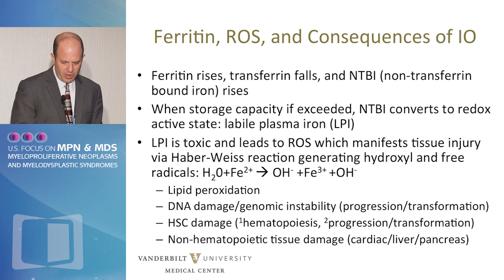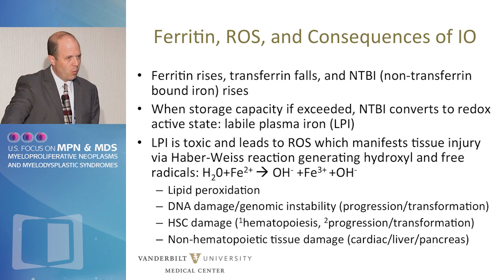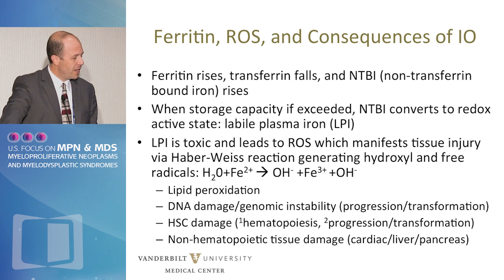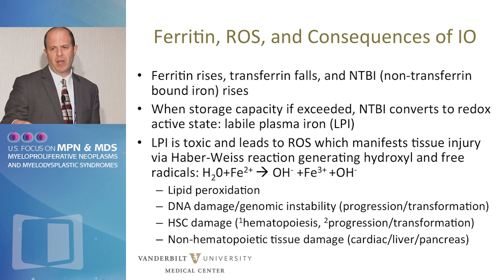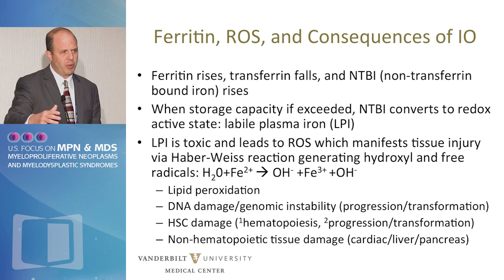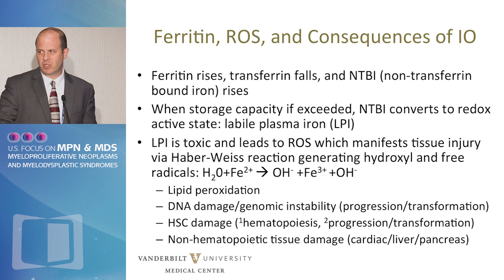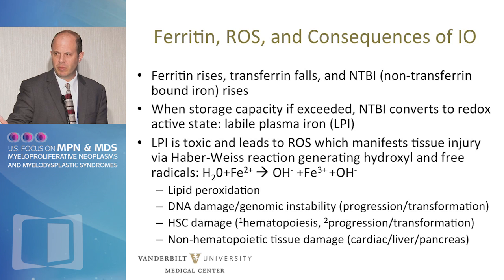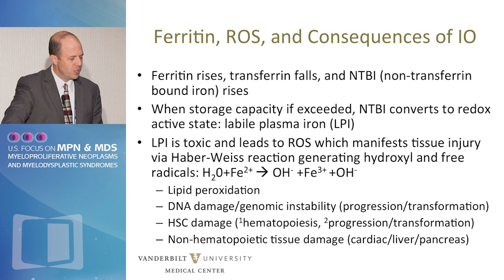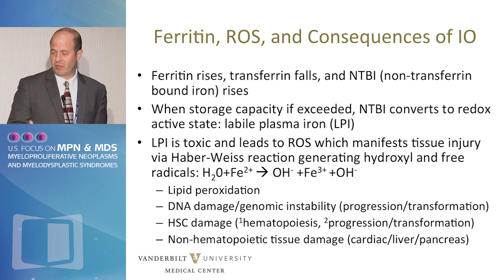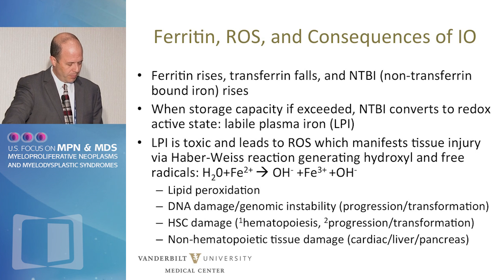This is probably the most obvious slide to this group, but I'll quickly run through why iron overload leads to problems. As ferritin rises and transferrin falls, non-transferrin-bound iron rises and converts — when the storage capacity is exceeded — into labile plasma iron, which is the redox-active form of iron and leads to free radicals. Free radicals can cause lipid peroxidation, DNA damage, genomic instability, and HSC damage — which is the hypothesis behind how chelation can stimulate hematopoiesis — as well as non-hematopoietic tissue damage in the heart, liver, pancreas, eye, and skin.